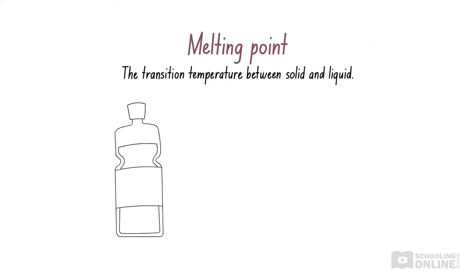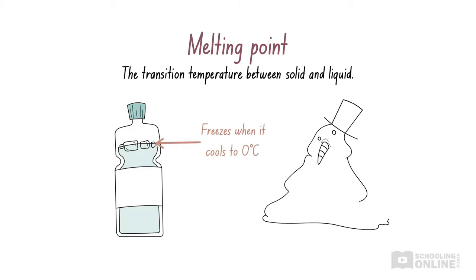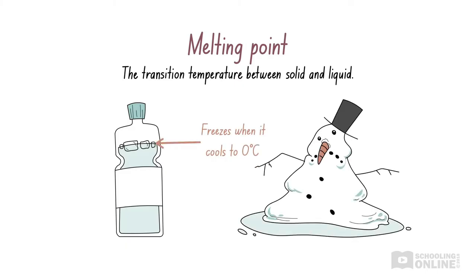For example, when you place liquid water in a freezer, it changes into solid ice when it reaches zero degrees Celsius. On the other hand, when you heat ice to zero degrees Celsius, it melts into liquid water. So the physical changes of melting and freezing occur at the same transition temperature, which we refer to as melting point.